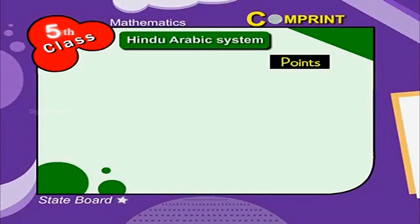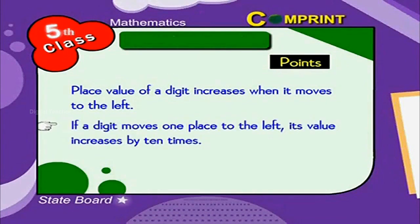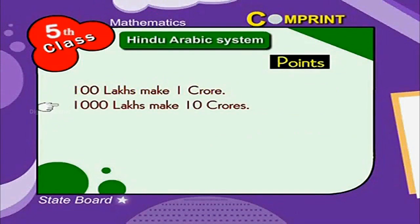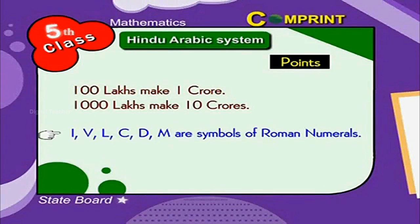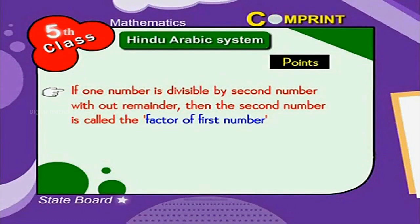Points to remember: the place value of a digit increases when it moves to the left. If a digit moves one place to the left, its value increases by 10 times. 100 lakhs make 1 crore. 1000 lakhs make 10 crores. If one number is divisible by a second number without a remainder, then the second number is called the factor of the first number.